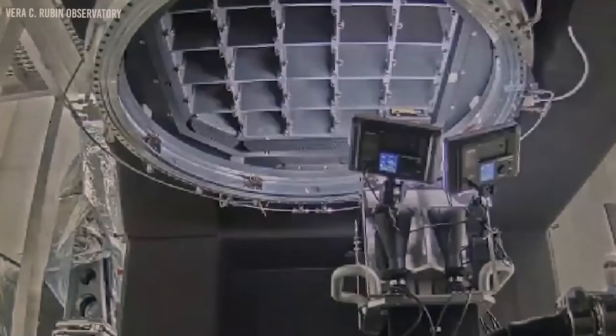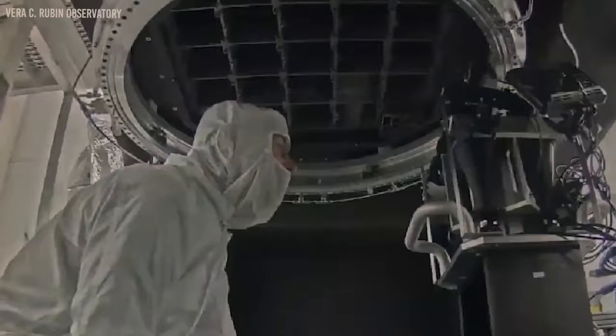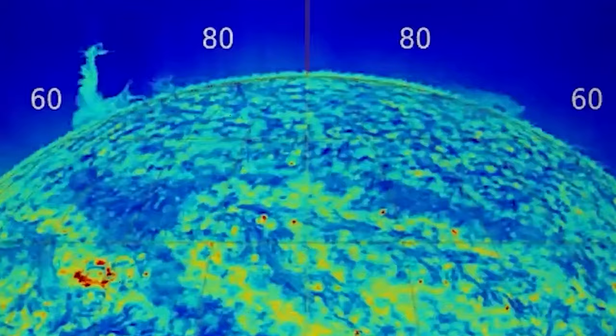Betelgeuse's impending supernova belongs to a category called core-collapse supernova, which occurs when massive stars exhaust their nuclear fuel and can no longer resist gravitational collapse. These are among the most powerful events in the universe. When Betelgeuse finally explodes, it will unleash an extraordinary amount of energy in mere seconds, equivalent to the energy our sun releases over billions of years. The energy will mainly manifest as electromagnetic radiation spanning from visible light to X-rays and gamma rays.